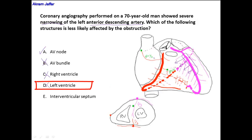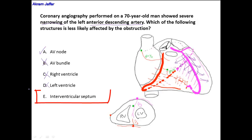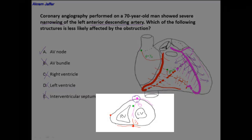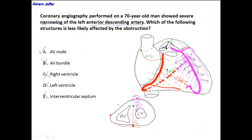The left ventricle will be affected because it is supplied by diagonal branches from the LAD, which supply the anterior surface of the left ventricular wall. The interventricular septum must also be affected because of the septal branches of the left anterior interventricular artery supplying the anterior two-thirds of the septum. So we are left only with option A — the AV nodal branch — because whether it branches from the right coronary artery or the circumflex, it is never a branch of the anterior interventricular artery.